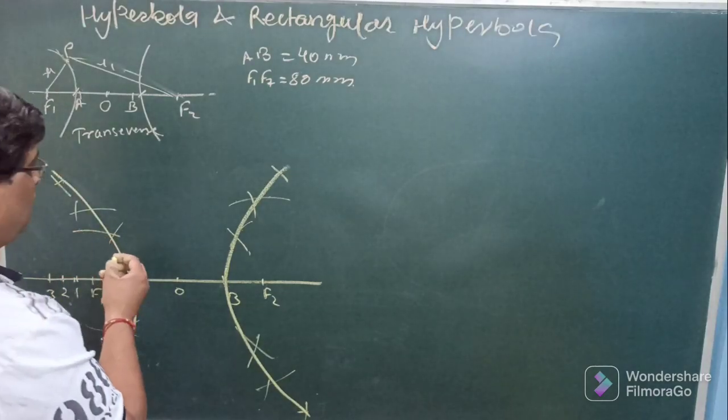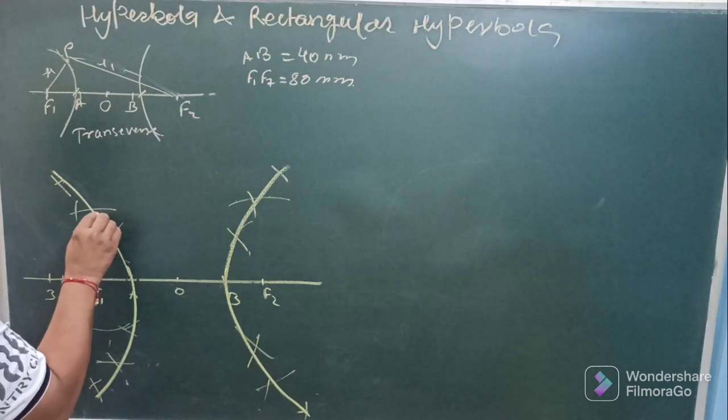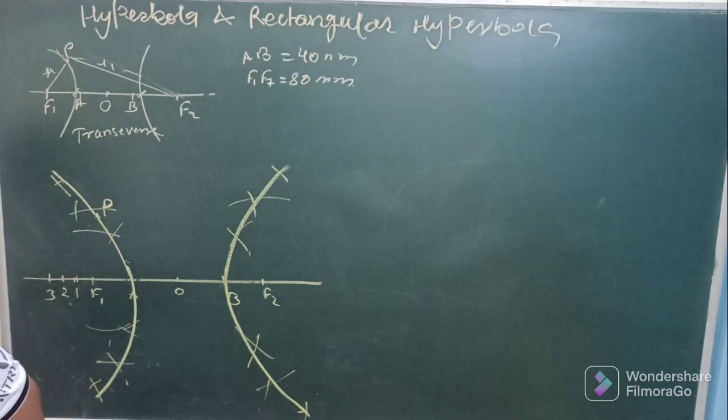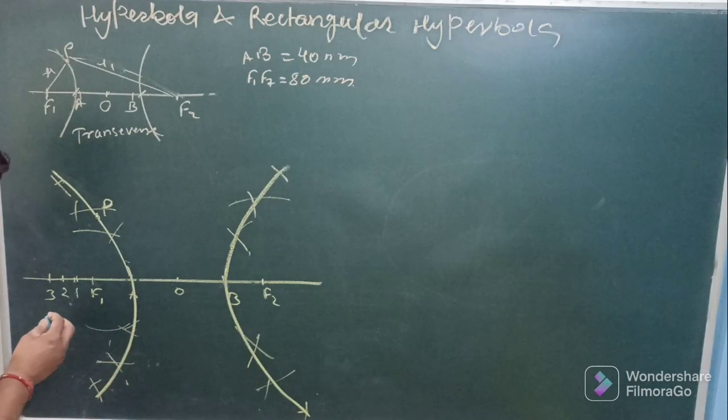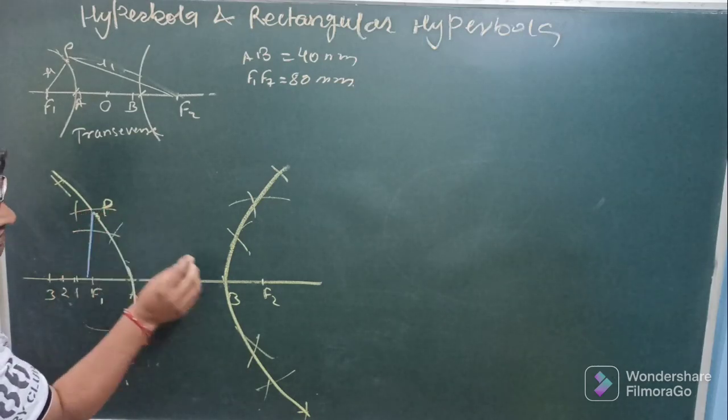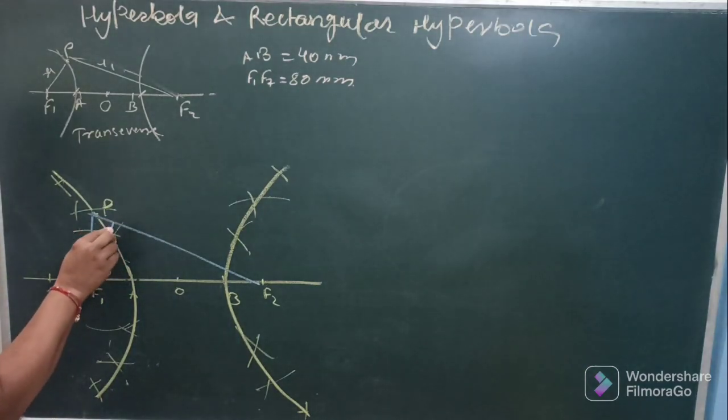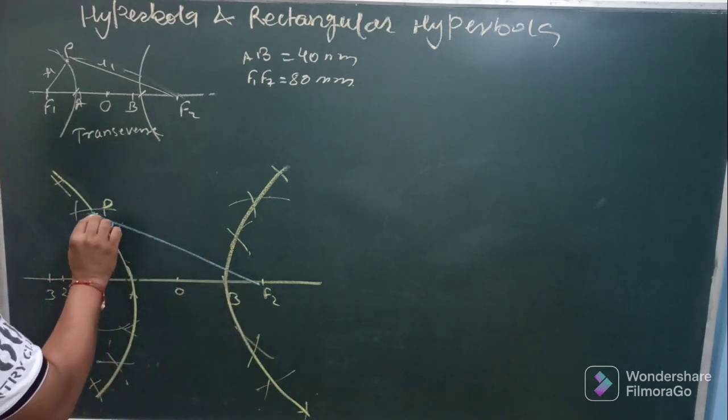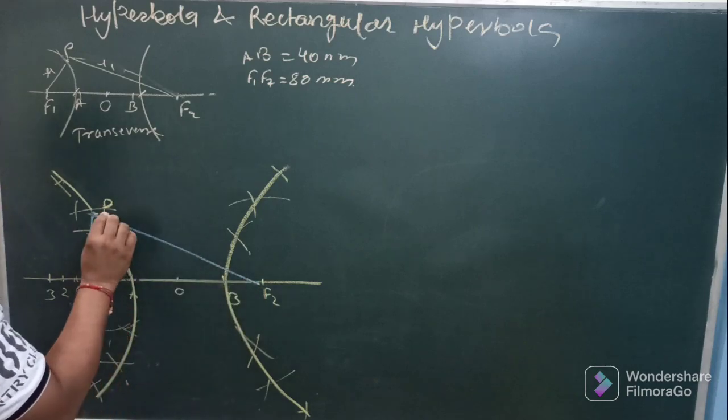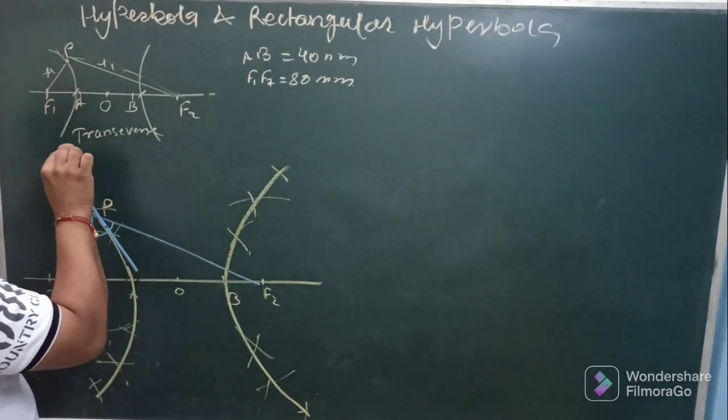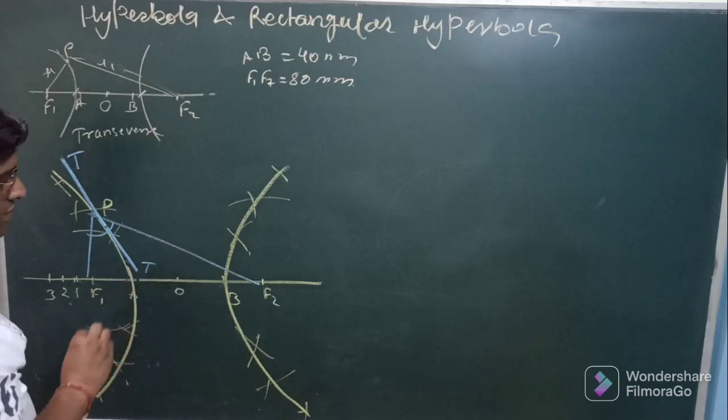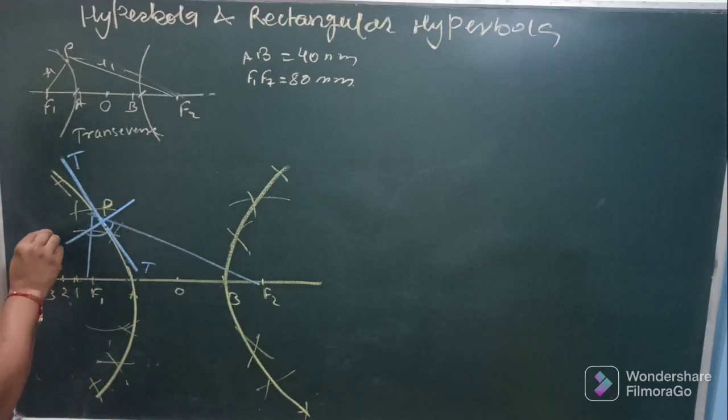For drawing tangent and normal at any point say we want to draw a tangent and normal at point p here. Just join this point p with f1 and f2. So we will be getting some angle f1 p f2, bisect this angle. The bisector will be tangent to the curve and a perpendicular on this bisector will provide you normal to the curve.